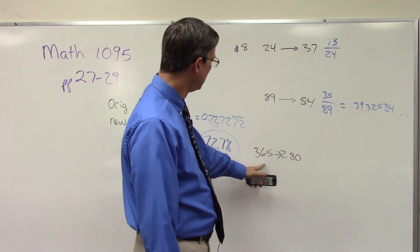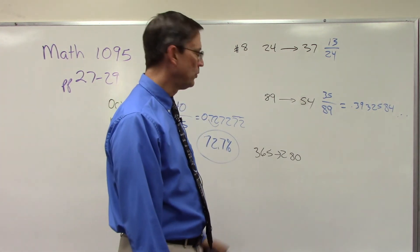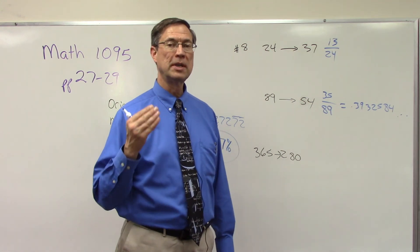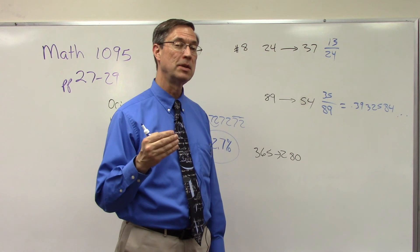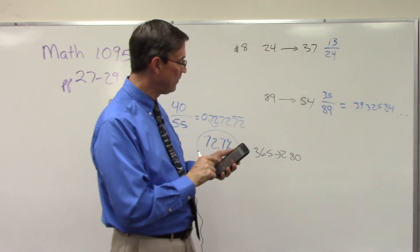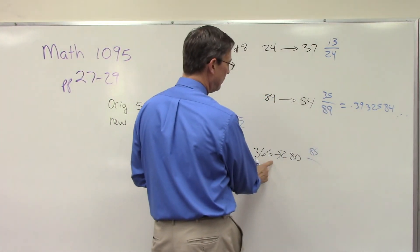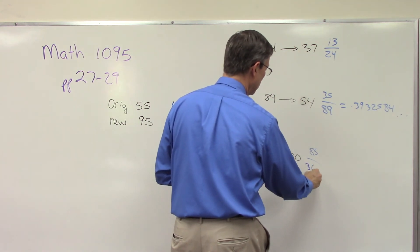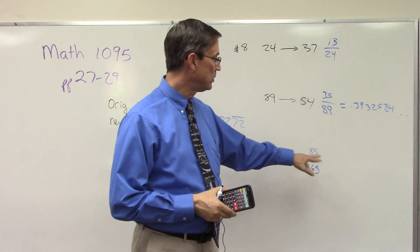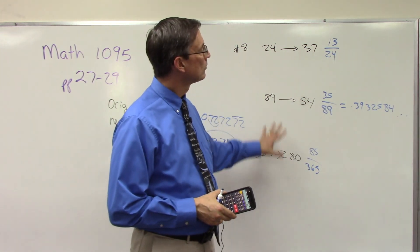On the next page they have one with a large number going from a large number down to a smaller number. They want you to calculate the percent change and indicate whether it's a percent increase or decrease. We're going from 365 down to 280, so when I subtract I get 85. Divide by the starting number 365. Once you get the percent, notice it is a decrease, so you have to label it that way.